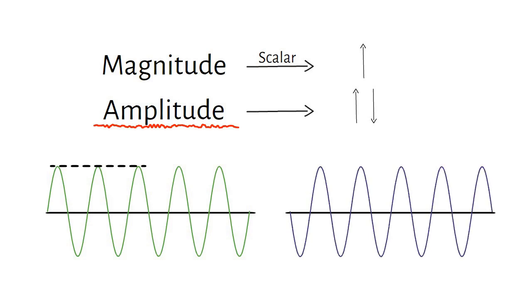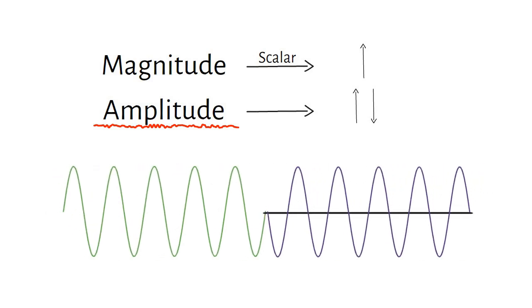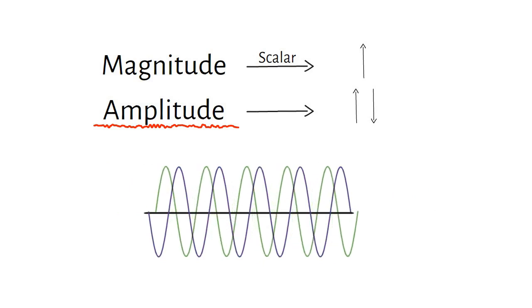Look at these two waves. They are both sinusoids, and they both have the same magnitudes. But the amplitude of the first wave is positive, and the amplitude of the second wave is negative. There is a phase difference of 180 degrees between the two waves.